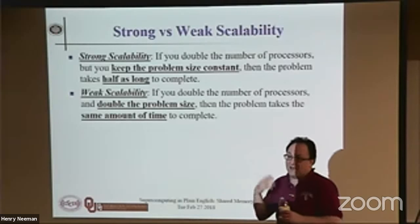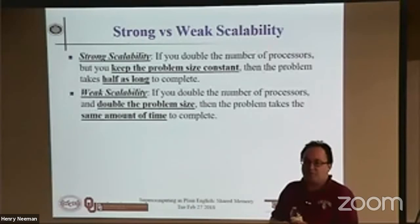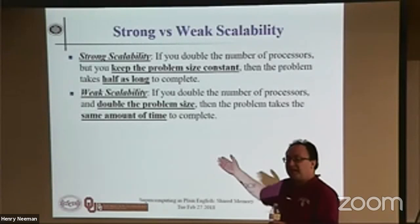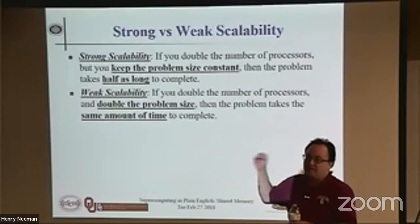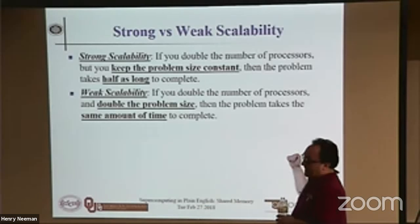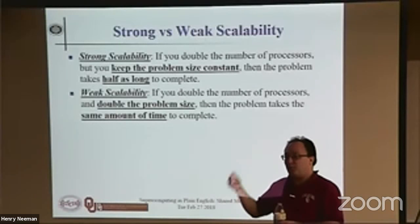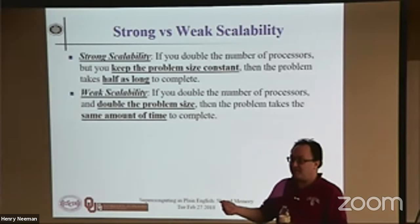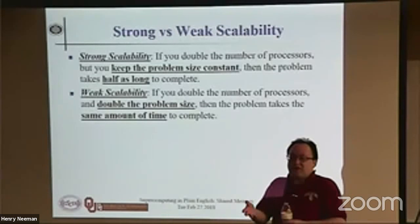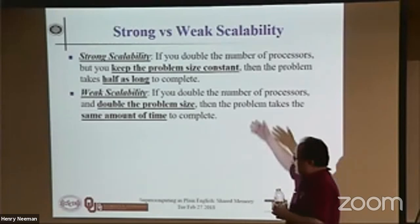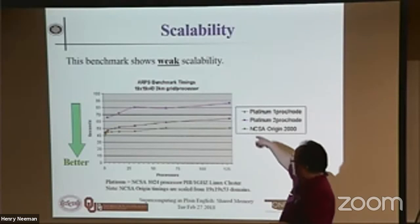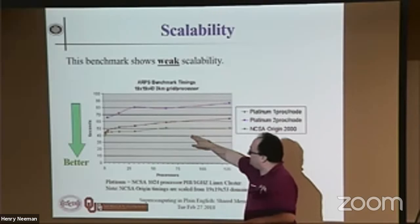There are two kinds of speedup, or scalability — 'scalability' is just a highfalutin word for 'it runs faster with more processors.' Strong scalability — the less useful version — means: if I keep the problem size fixed but throw more processors at it, it runs faster. Weak scalability — typically the more useful version — means: if I increase the problem size proportional to the number of processors, it takes the same amount of time. In real life, weak scalability is ironically more valuable, because what we actually want to do is run bigger problems. That graph I just showed you is an example of weak scalability.